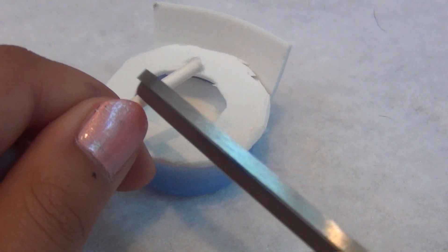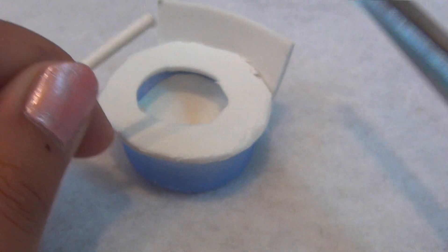Now, snip a small piece of your cotton swab. That will be used as the flush.